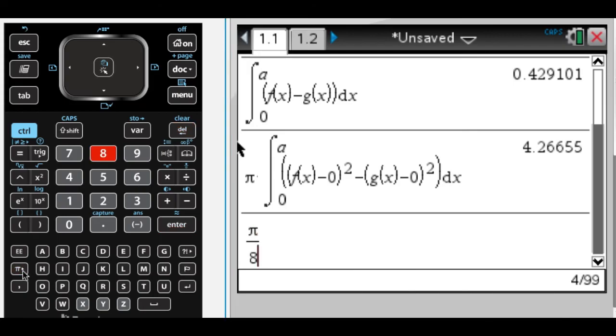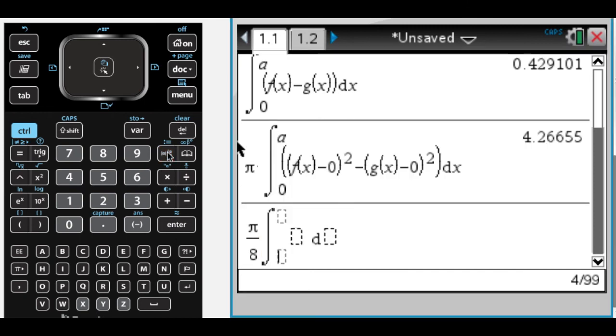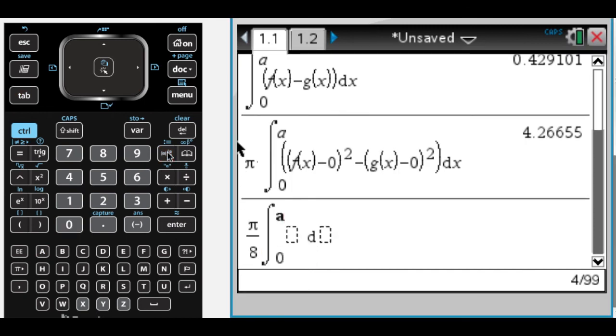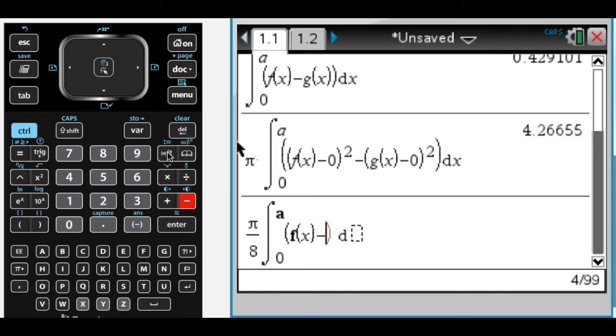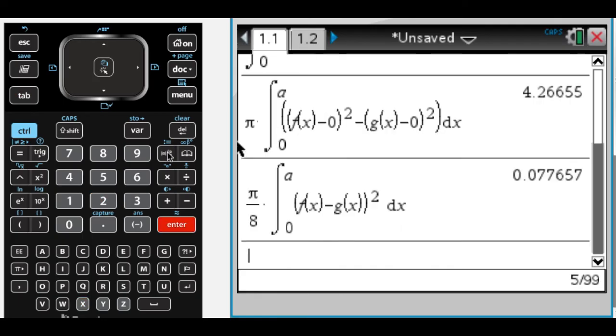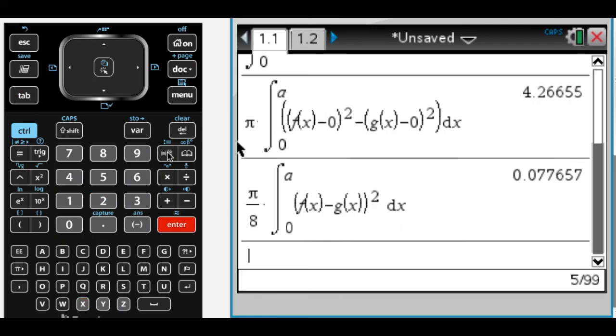It's easier for me to type pi, but I'll do this pi over 8. And then it's the definite integral from 0 to A of, so it's top, take away, bottom, and then squared with dx. And that's really small, but that's the answer.